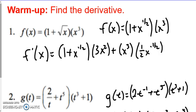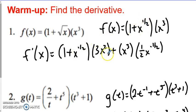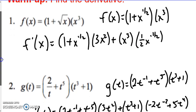Okay, so here's the first one. Hopefully you see what I did over here on the right. Again, we need to rewrite this radical as a fractional exponent. Then I did the product rule — first times the derivative of the second plus second times the derivative of the first. And same exact process down here for number two.